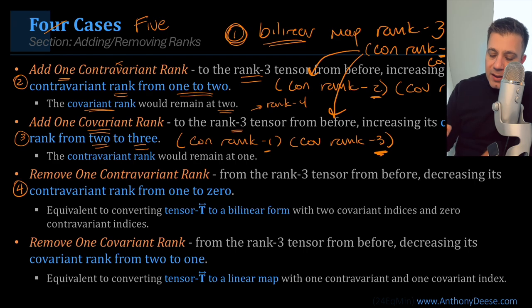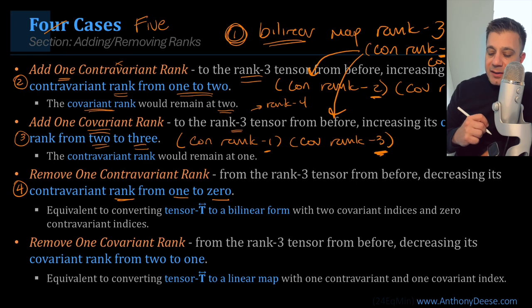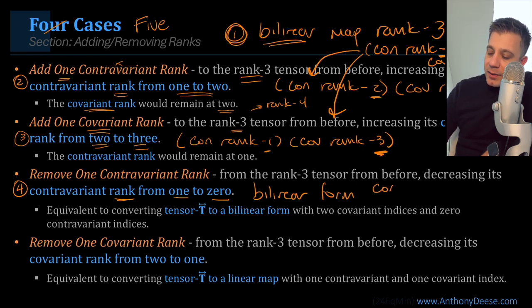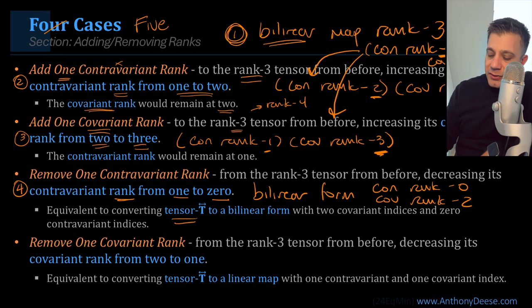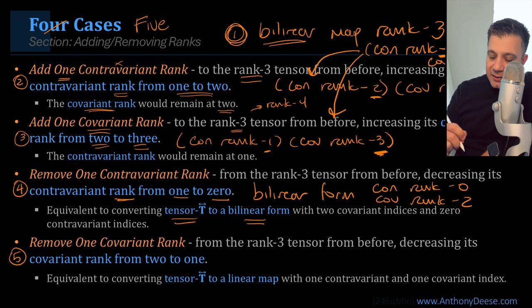Case 4: we remove one contravariant rank from the rank-3 tensor, decreasing its contravariant rank from one to zero. That essentially leaves us with a bilinear form — contravariant rank zero, covariant rank two. Case 5: remove one covariant rank from the rank-3 tensor, decreasing its covariant rank from two to one.